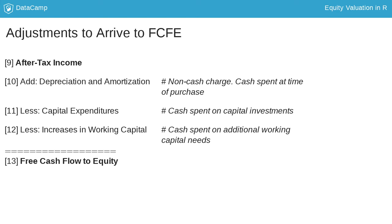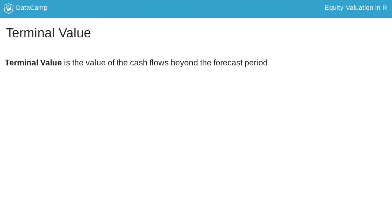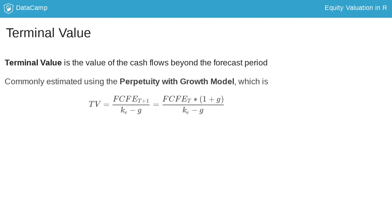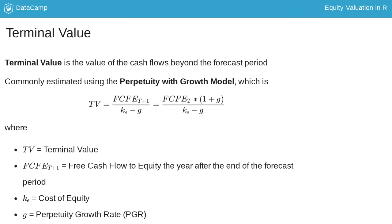Increasing working capital means that you need to invest more cash. The projections are only for a finite period of typically 5 to 10 years, but firms are assumed to have indefinite lives. So the value of the firm should account for cash flows beyond the 5 or 10 year projection period. The terminal value is commonly estimated using the perpetuity with growth model, which takes the FCFE the year after the end of the forecast period and divides it by the difference between the cost of equity and the perpetuity growth rate, or PGR. This mathematical trick accounts for all cash flows into perpetuity growing at a constant rate.